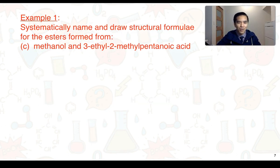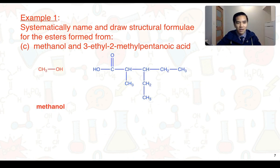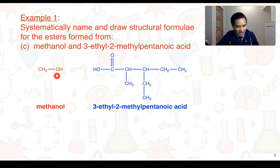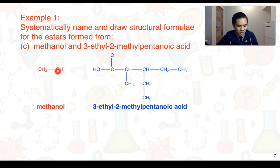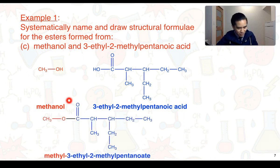For the third example, we've got methanol and 3-ethyl-2-methylpentanoic acid. Here's the structure of methanol and here's the structure of 3-ethyl-2-methylpentanoic acid, with the hydroxyl and carboxyl groups lined up so we can see which atoms are lost as water. We join this carbon to this oxygen to form our ester functional group. In terms of the name, the alcohol comes first: methanol becomes methyl. Then 3-ethyl-2-methylpentanoic acid becomes 3-ethyl-2-methylpentanoate.